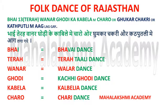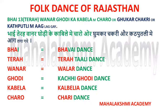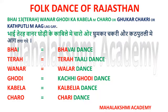The trick is in Hindi and you have to remember it. Through this trick we can learn all the dances performed in Rajasthan. The trick is: Bhai tera wanar — and you know wanar is a monkey — ghodi ke kabile mein chaaro aur ghoom kar chakri aur katputli mein aag laga gaye.